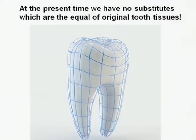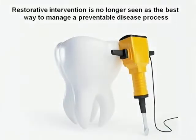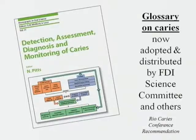As you heard yesterday, we have the green agenda and the amalgam agenda. At the present time, unfortunately, we have no substitutes — whether amalgam, resin, or gold — equal to the original tooth tissue. So the context of this discussion is we actually want to preserve and prevent natural tooth tissue because the substitutes are inadequate. Restorative intervention is no longer seen as the best way to manage a disease which is preventable. But unfortunately, the payment system and structure in many countries still favors restorative or surgical treatment rather than preventive.